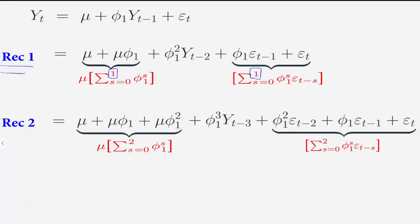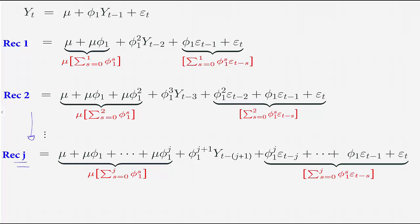In recursion 1, we get the summation in mu and φ1 up to 1, and the same for the shocks, with φ1 to the power 1+1 multiplying Yt minus 2. In recursion 2, we get the sum in mu and φ1 up to 2, with φ1 to the power 2+1 multiplying Yt minus 3. We can now do this for an arbitrary number of recursions J: we get the sum up to J for the mu part, the sum up to J for the shocks, and φ1 to the power J+1 multiplying Yt minus (J+1), following the same pattern observed at each recursion step.